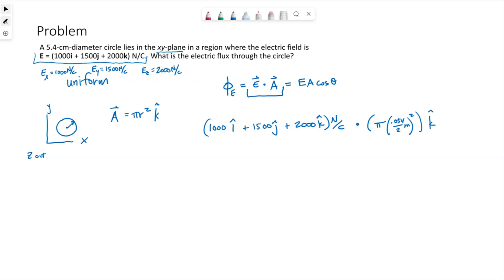So when we take the dot product or solve the dot product, we are only multiplying components of vectors that are in the same direction. So our electric flux will be this 2000 newtons per coulomb times the pi r squared.